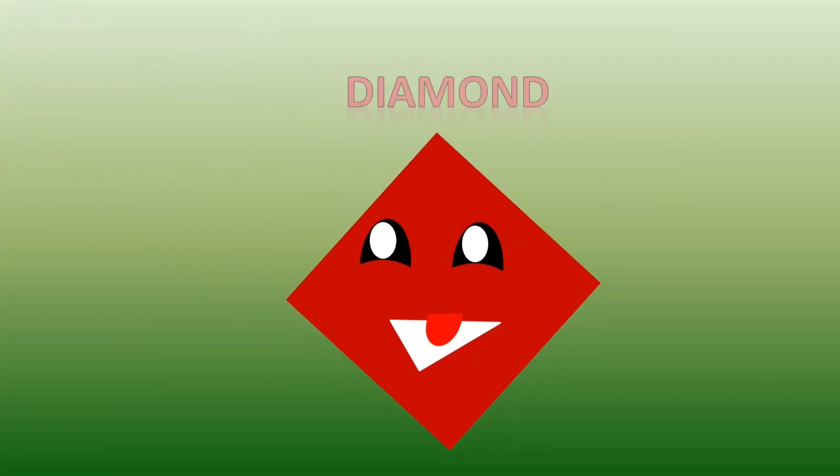What is the shape of this one? Diamond. Very good. This is a diamond. A diamond has four sides. Opposite sides are parallel and its opposite angles are equal. Can we guess what are the objects diamond in shape?